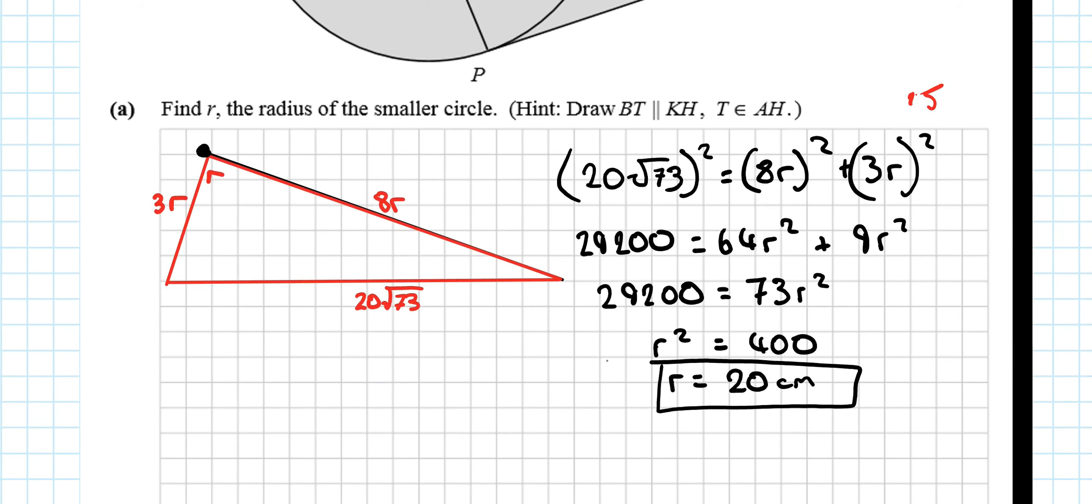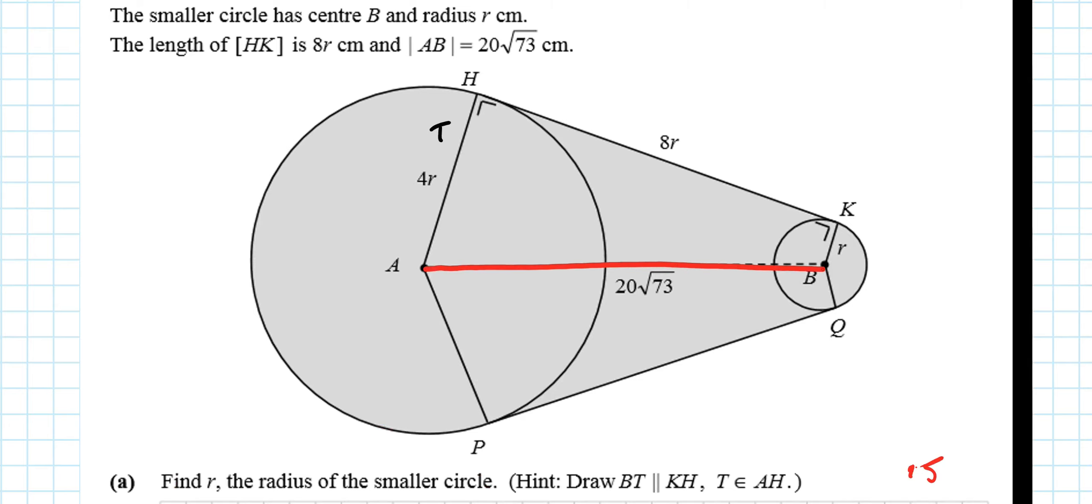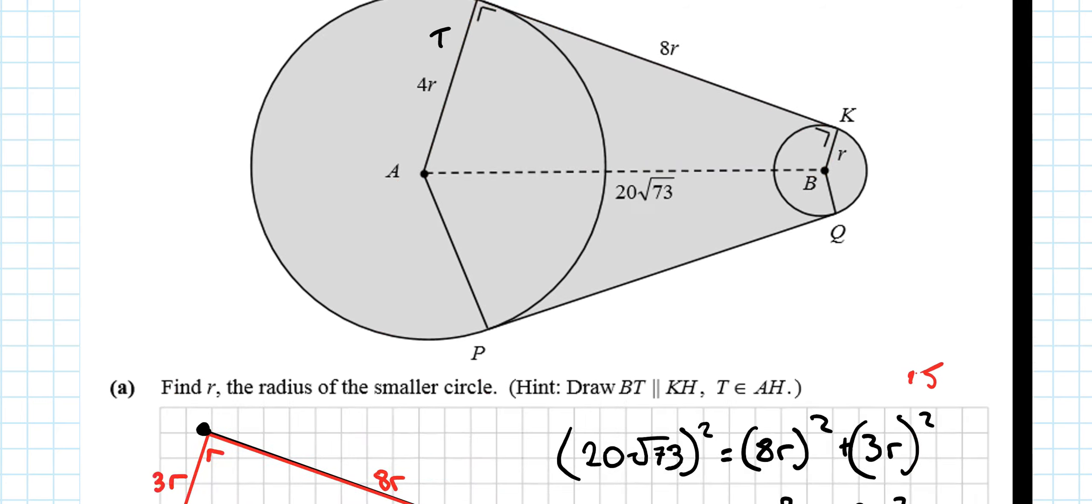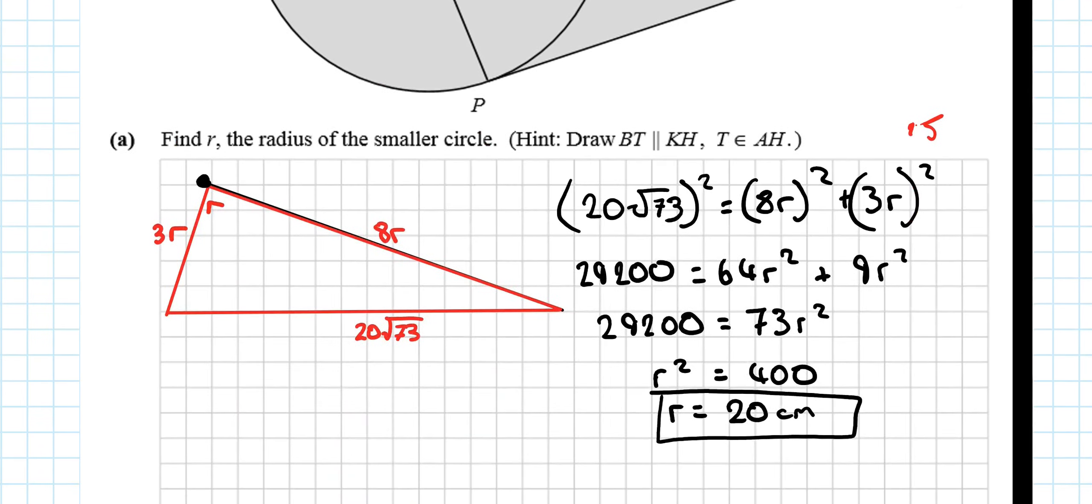Really nice question, 15 marks. Next part of it, then. Find the area of the quadrilateral ABKH. The four-sided shape A, B, K, H. Okay, so I can actually use my diagram that I've already got here. I'm going to drag this down again.